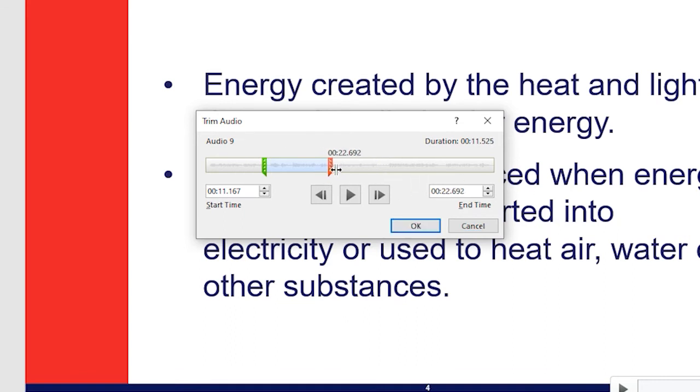I'll simply move the out marker over to the end here. Grab the in marker and bring it somewhere here because I believe this is where I started the narration of the second bullet point. Let's have a listen. Solar power is produced when energy from the sun is produced. Perfect.